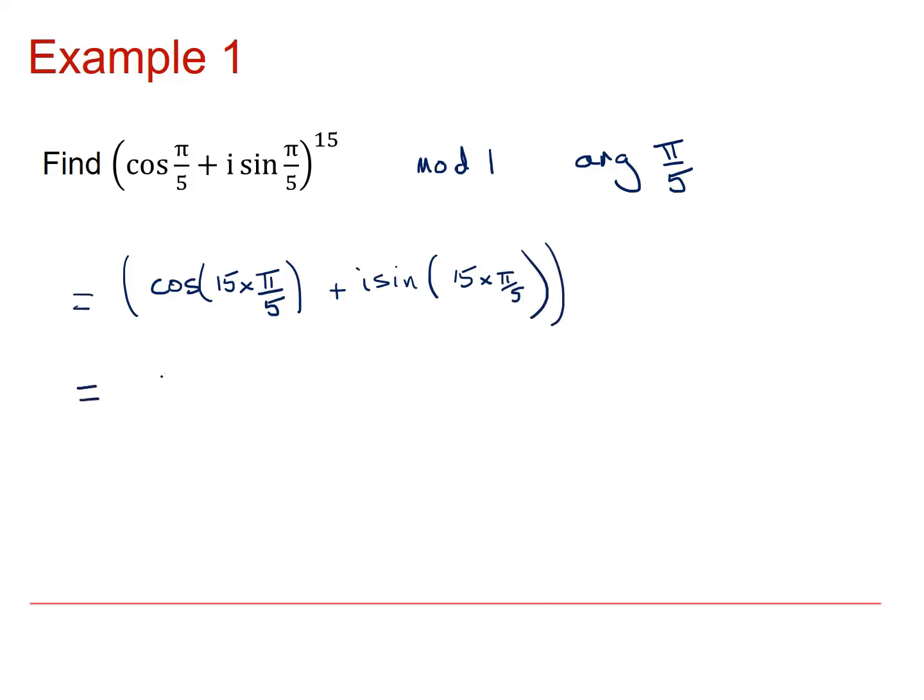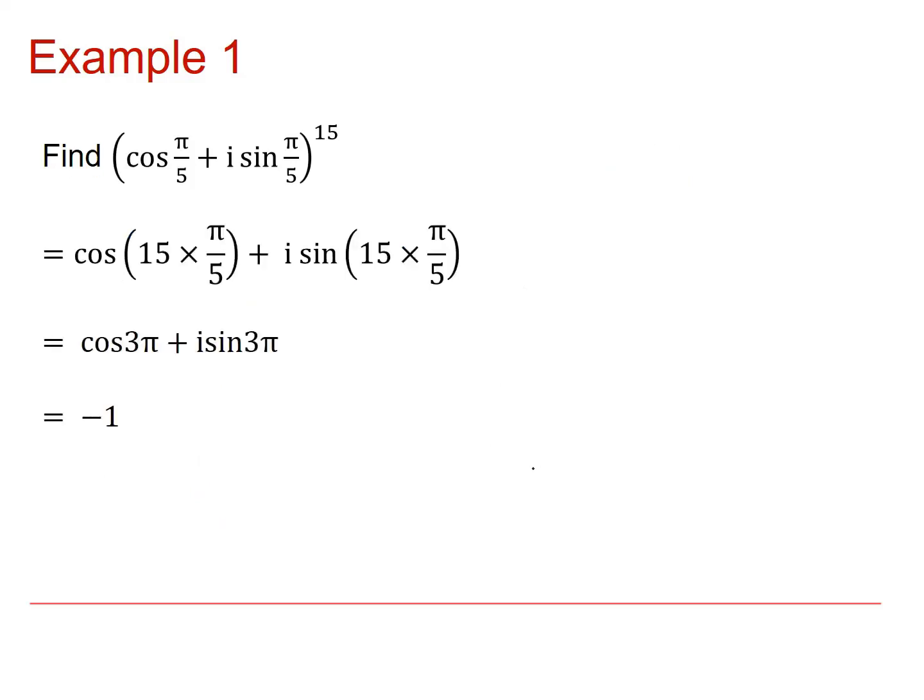So that becomes cos of 3 pi plus i sine of 3 pi. Well, cos of 3 pi is just minus 1, sine of 3 pi we know is 0, so the result is minus 1. There's that written up neatly for you.